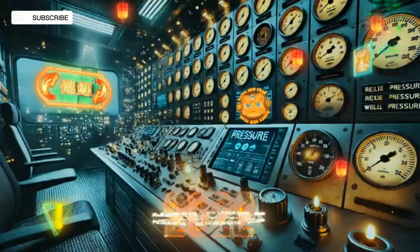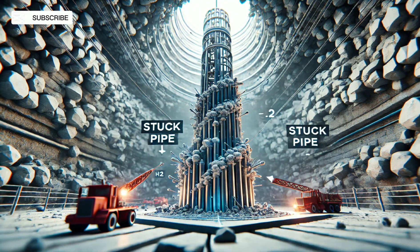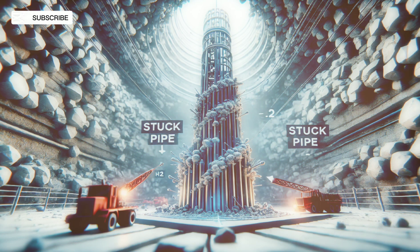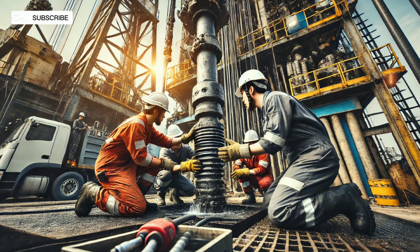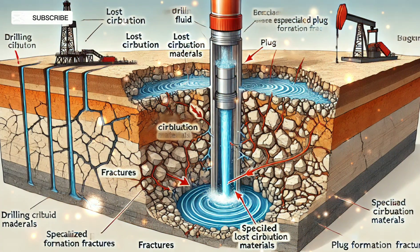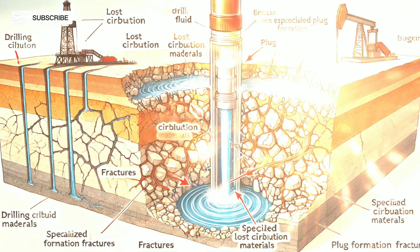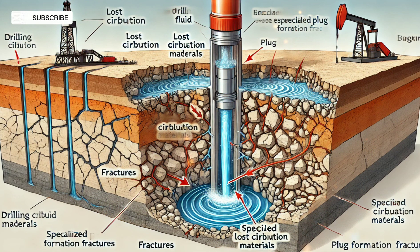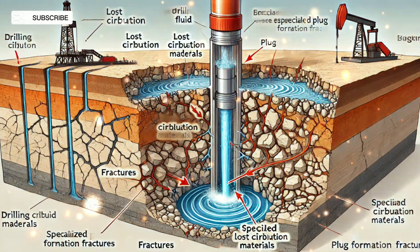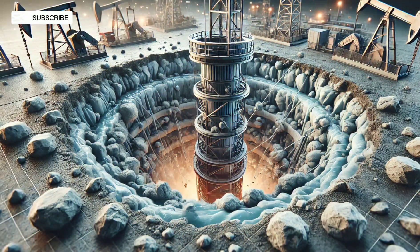Drilling isn't always smooth sailing. Here are three common challenges every driller must face. Stuck pipe: this happens when the drill string gets lodged in the wellbore — freeing it can involve techniques like back reaming or even chemical agents. Lost circulation: if mud escapes into the formation, you lose pressure control; specialized lost circulation materials, LCMs, can plug the gaps. Wellbore instability: this can cause the hole to collapse or shale to swell; adjusting mud properties and casing placement helps keep the wellbore intact.